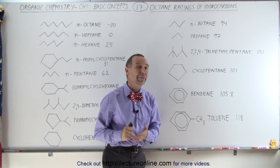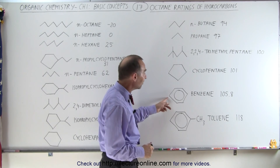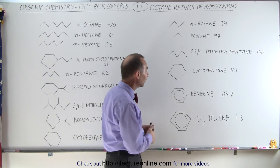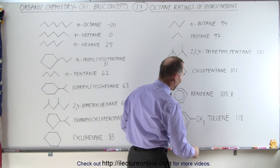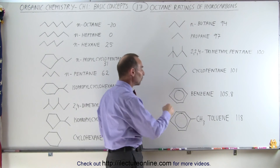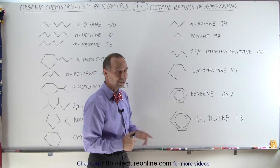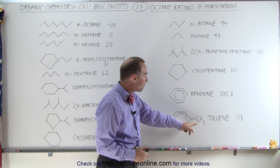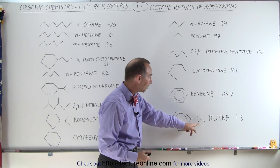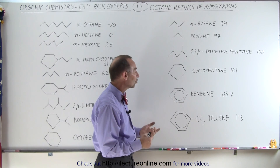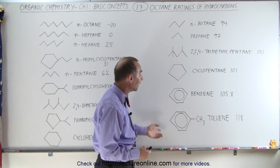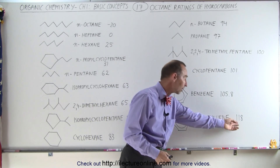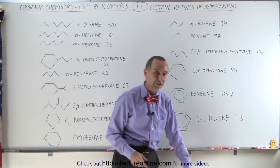And now to the benzene ring — here we have benzene by itself, it has an octane rating of 105.8. And then here's something we haven't seen yet: a benzene with a methyl attachment to it. That is called toluene — it has a common name toluene — and it has a very high octane rating of 118.